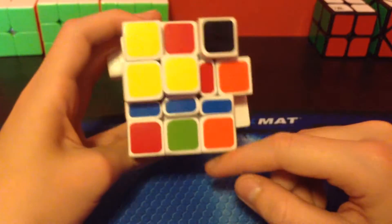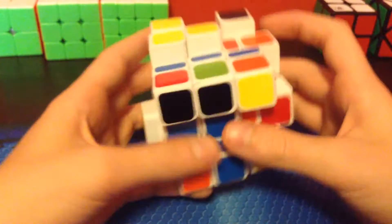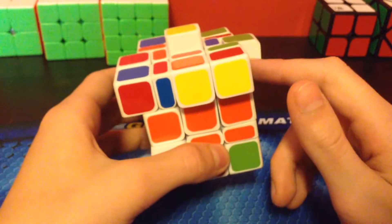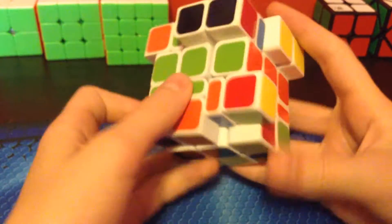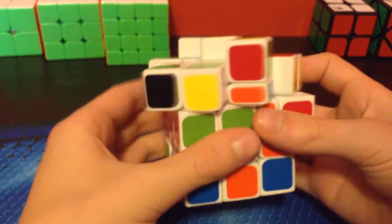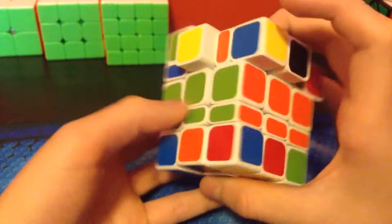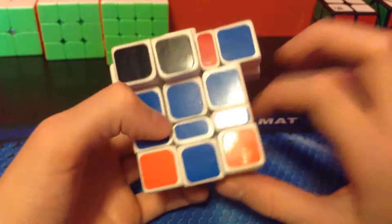And since white would be here, and the red and blue edge is here, I can just solve that like so, and then I see this corner with the edge right here. So, now you can see the middle two layers are solved right here.